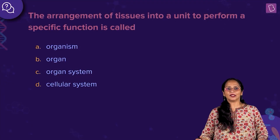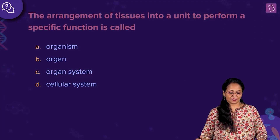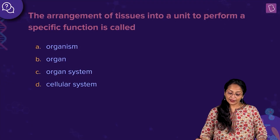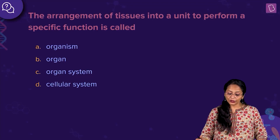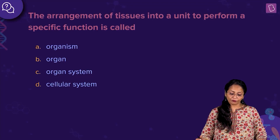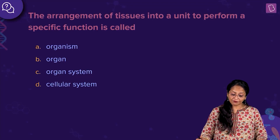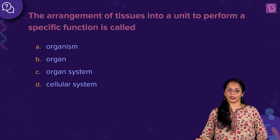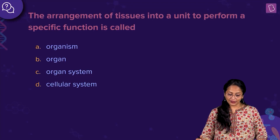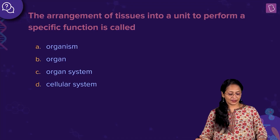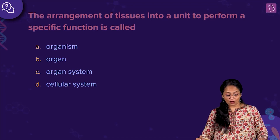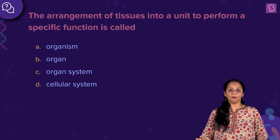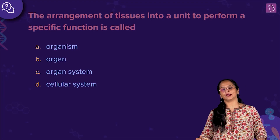Now let us look at this question. The arrangement of tissues into a unit to perform a specific function is called — organism, organ, organ system, or cellular system?